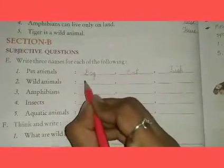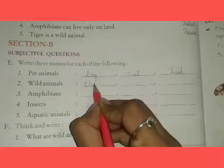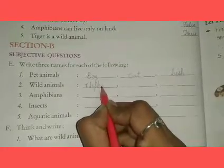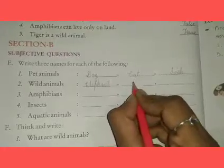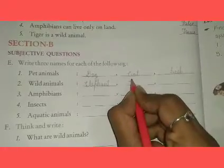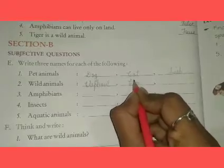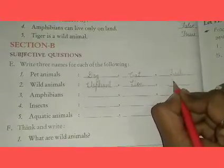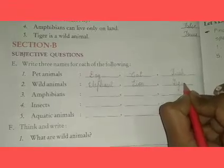Wild animals में बहुत सारे animals हैं, जैसे: elephant — E-L-E-P-H-A-N-T, elephant. Second: lion — L-I-O-N, lion. Third: tiger — T-I-G-E-R, tiger.